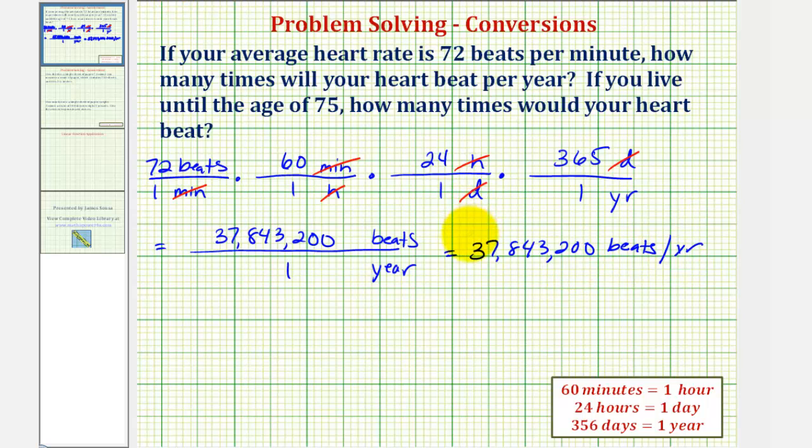Which may also just be written as 37,843,200 beats per year. So some of you may be surprised by this. Notice how your heart does work pretty hard. And now to answer the second part of the question, how many times your heart would beat if you lived to be 75 years of age?